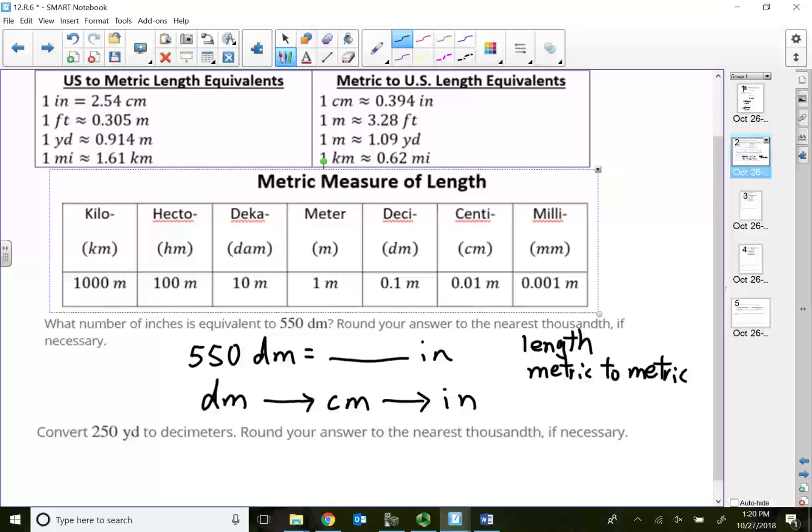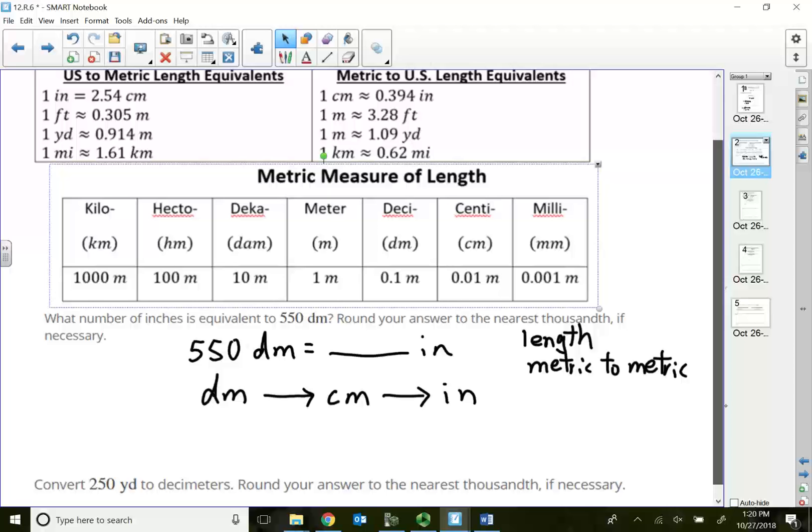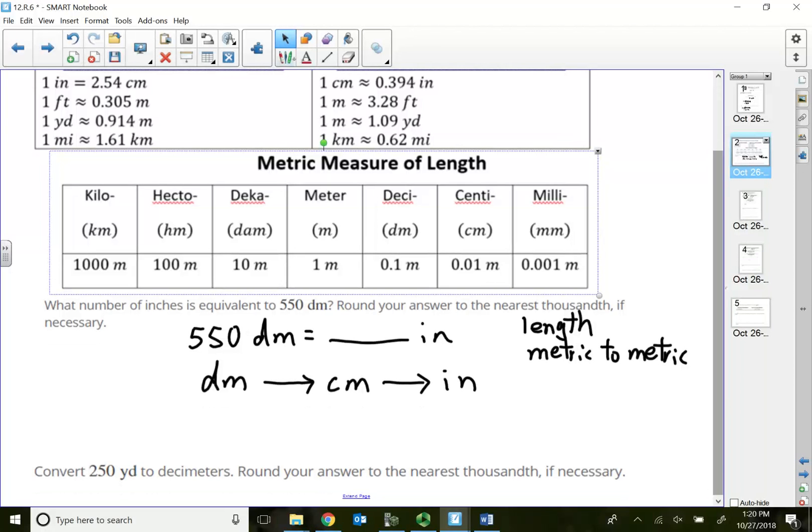Think about this: inches take me to centimeters, but the question is, can I go from deci to centi? Centi is here, deci is here, so I can actually go from deci to centi as well. That means this problem must go through centimeters before I can get to inches. So let's do deci to centi first.